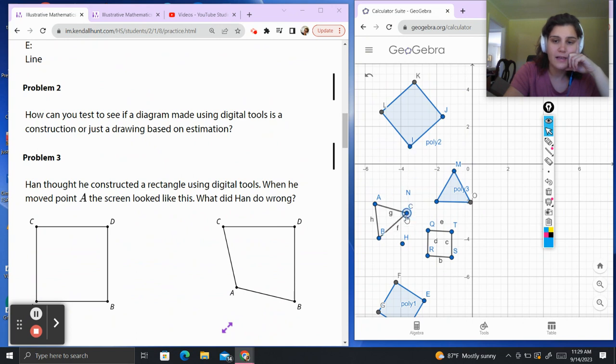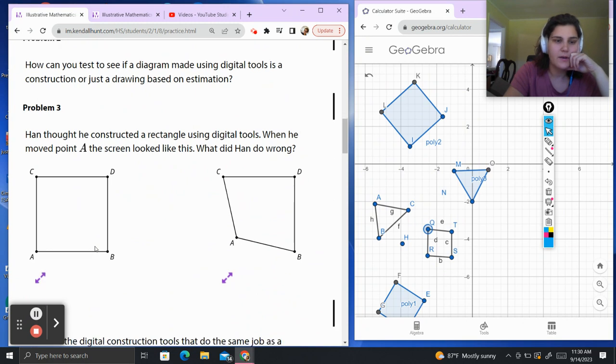This guy over here, I draw a point, he just drags. He is not based on a construction. I drew that based on estimation. If the point stays the same in relative distance to the other points, we can assume it's a construction. If we drag it and it moves one of the points, then we would assume it is an estimation.